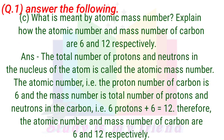What is meant by atomic mass number? Explain how the atomic number and mass number of carbon are 6 and 12 respectively. The total number of protons and neutrons in the nucleus of the atom is called the atomic mass number. The atomic number of carbon is 6 (number of protons). The mass number equals total protons plus neutrons: 6 protons plus 6 neutrons equals 12. Therefore, the atomic number and mass number of carbon are 6 and 12 respectively.